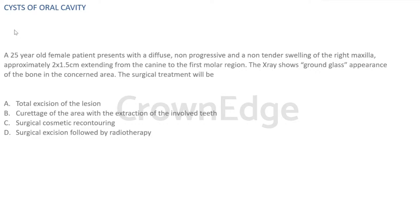It's a bony lesion with ground glass appearance that is non-tender — a fibro-osseous lesion. The answer is fibrous dysplasia. The key features to remember: ground glass or orange peel appearance, onset in the first or second decade of life, and it is mostly painless.